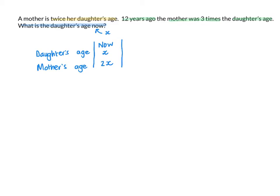If I made the mother x, then the daughter would be half of x. I find it easier to avoid fractions to make my calculations a little bit easier.